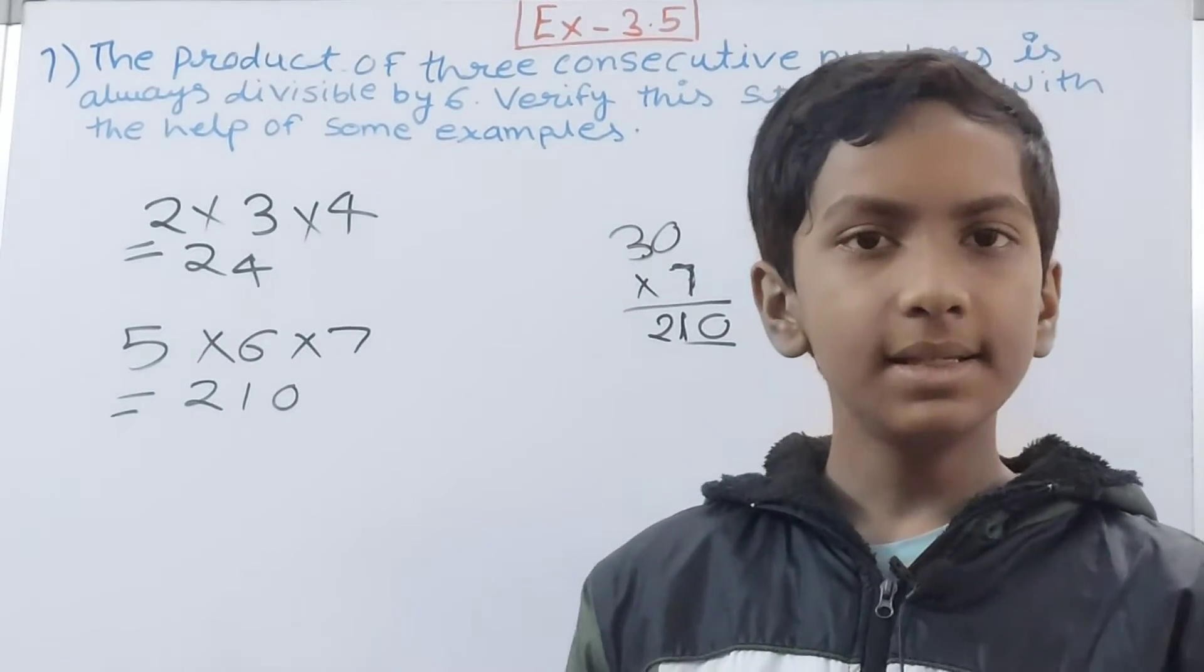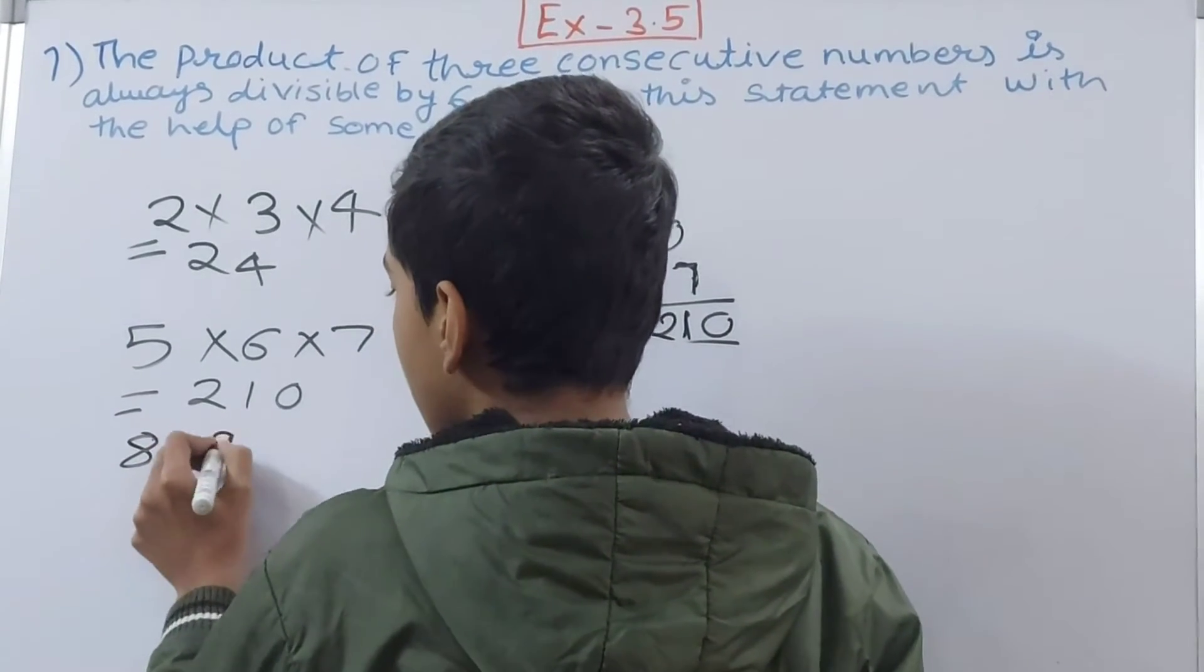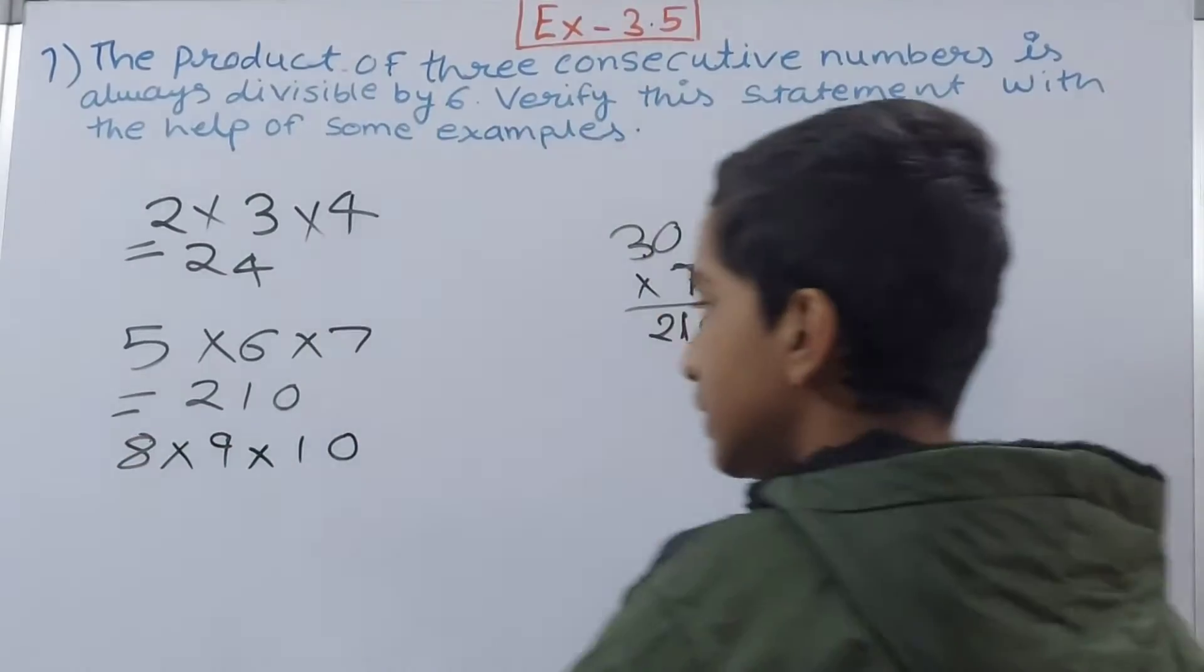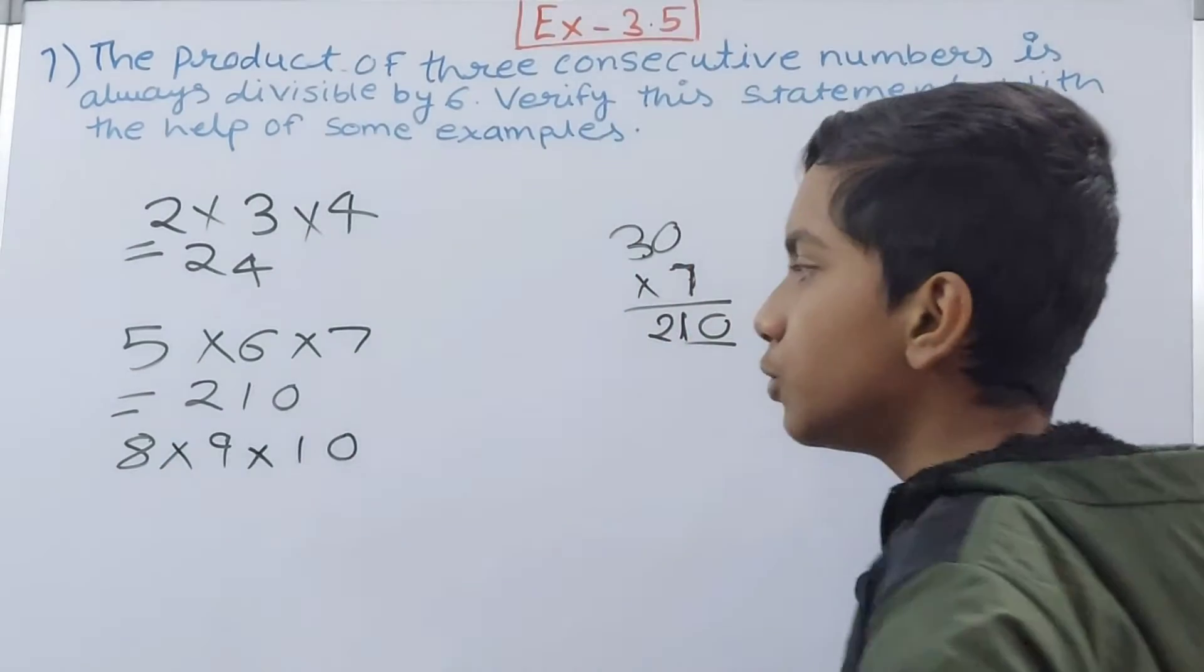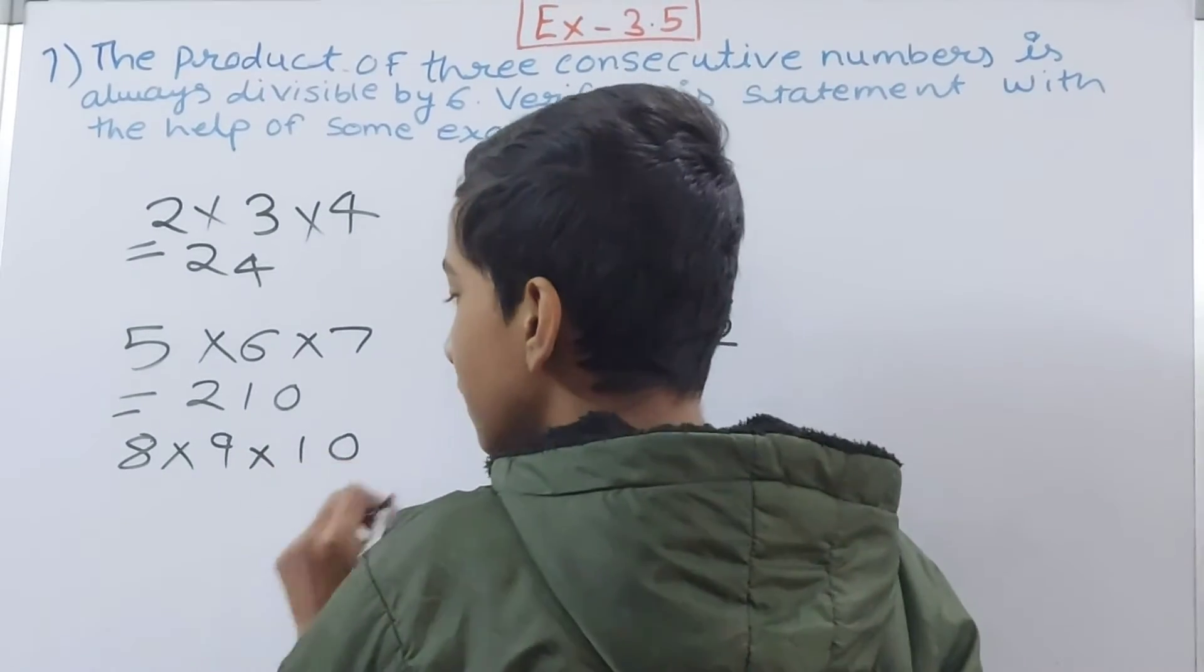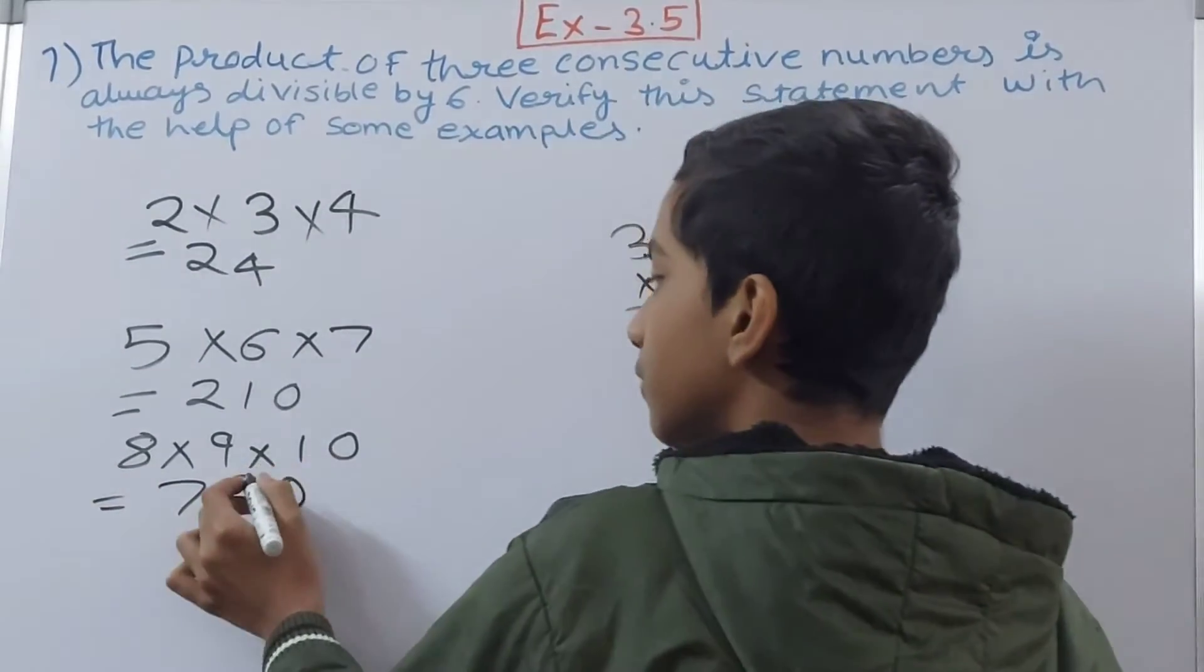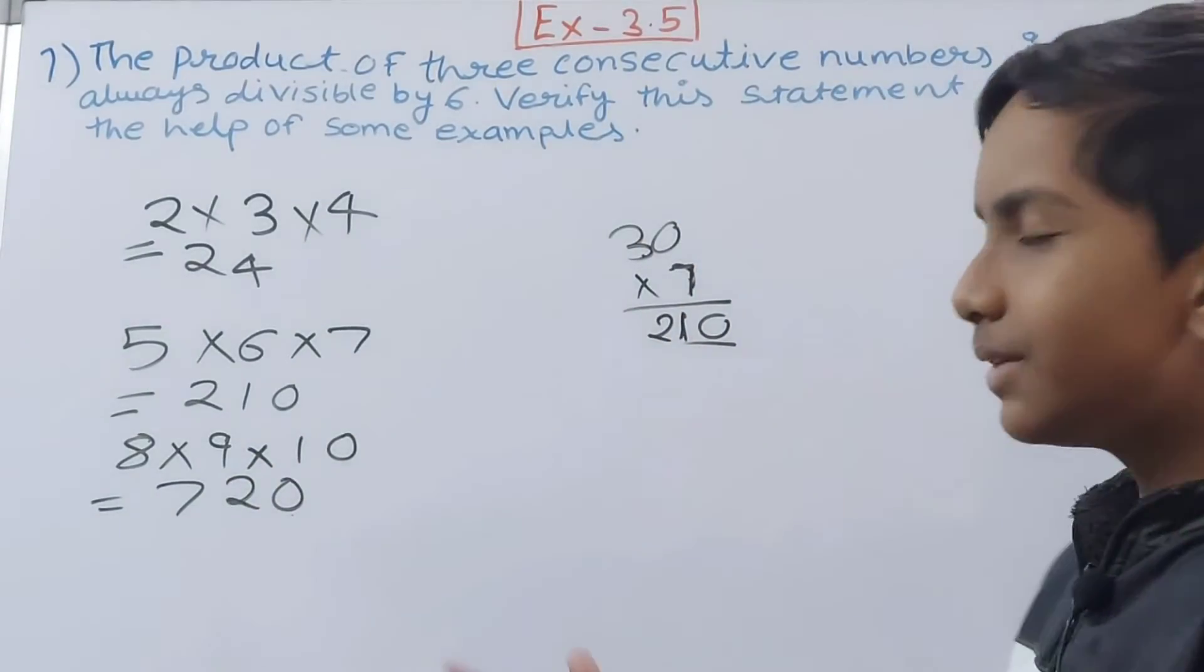Let us take some more consecutive numbers: 8, 9, and 10. 8 into 9 is 72, and 72 into 10 is 720, because when we multiply by 10 this 0 will come down as it is.